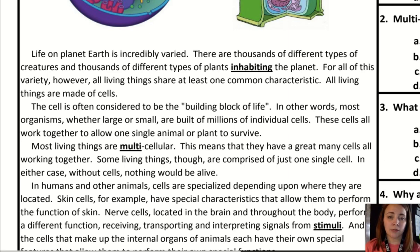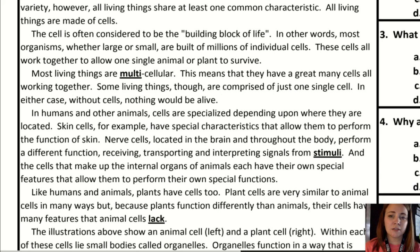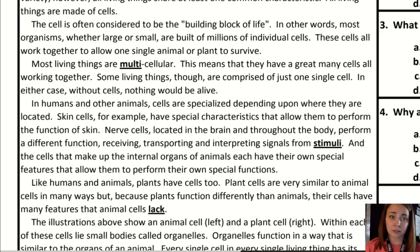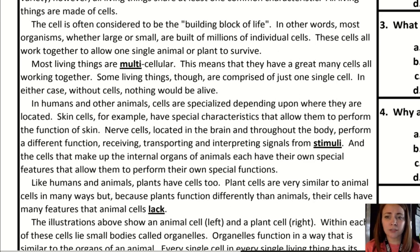These cells all work together to allow one single animal or plant to survive. Most living things are multicellular, meaning they have a great many cells all working together. Some living things, though, are comprised of just one single cell. In either case, without cells, nothing would be alive.